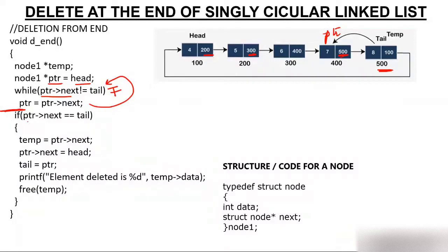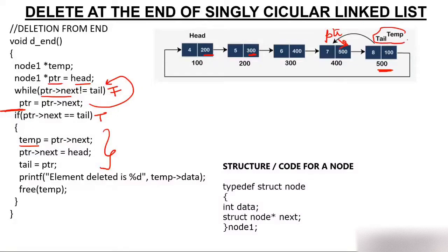After coming out of the loop, I check: if PTR->next equals tail. PTR->next is 500 and tail is 500, so the if condition becomes true. I move inside the if block. I assign temp = PTR->next, so temp gets 500 — temp comes to the 500 node. Both temp and tail are now representing the 500 node. Then I assign PTR->next = head, which is 100. So this pointer now points from node 400 to node 100.